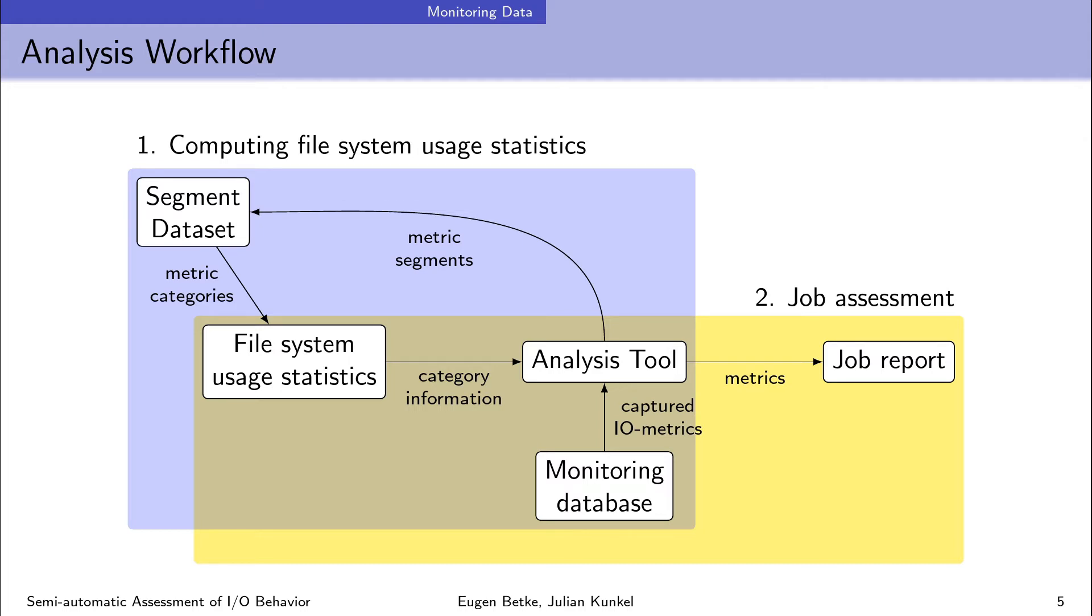After it grows sufficiently large, we compute statistics about file system usage and based on these statistics we are able to say to which category the segment belongs. More precisely, we are able to say if the performance is low, high, or critical. This category information flows back to the analysis tool and in the second step the analysis tool can use this categories information to assess jobs. For job assessment, the analysis tool downloads monitoring data, this time only for a job, splits its segments and determines categories for them. By looking at the distribution of categories in a job we are able to say if the job is I/O-intensive or problematic.